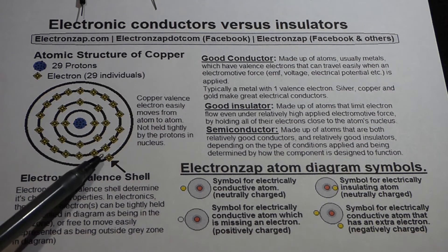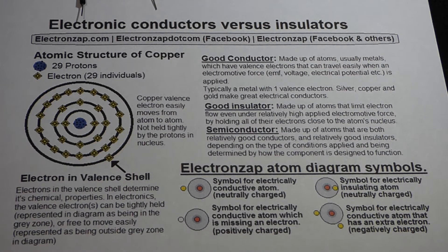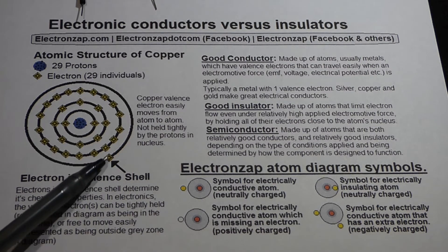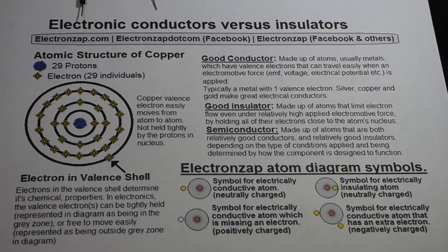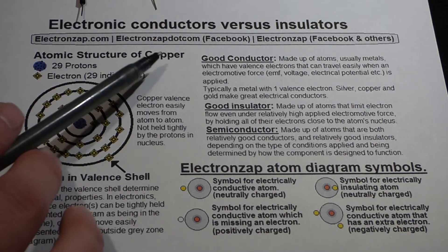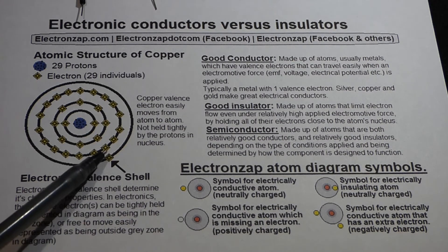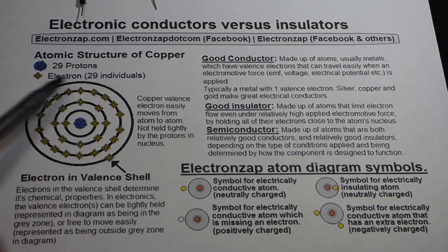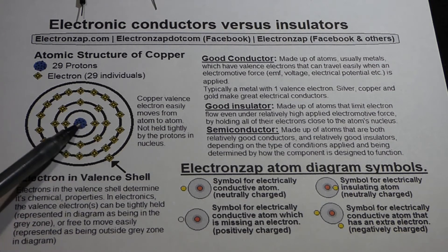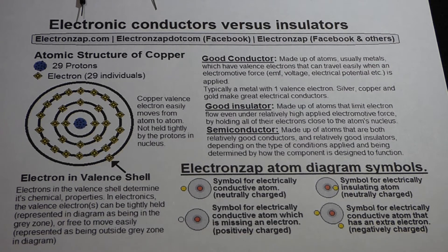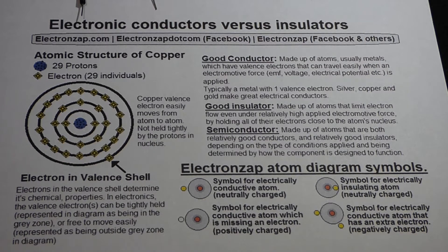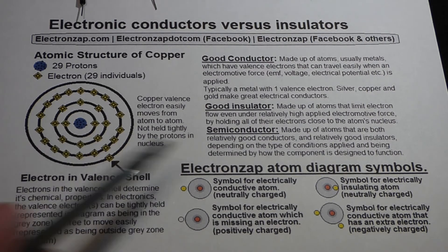Each shell can hold a certain number of electrons, and once it becomes full the atom needs another shell. With copper, the outer shell — the valence shell — has just one electron. This one electron is not held very strongly by the nucleus of the copper atom, so it can move around easily. That's what makes copper a good conductor — normally it's surrounded by a bunch of other copper atoms.